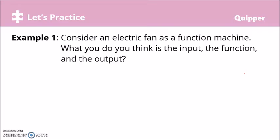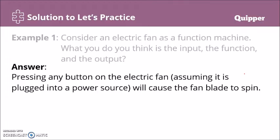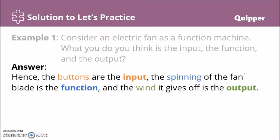Let's have this example: consider an electric fan as a function machine. What is the input, the function, and the output? Pressing any button on the electric fan — assuming it is plugged into a power source — will cause the fan blade to spin. Most electric fans have three or four buttons: zero, one, two, and three, depending on the strength level desired. The buttons are the input, the spinning of the fan blade is the function, and the wind it gives off is the output.